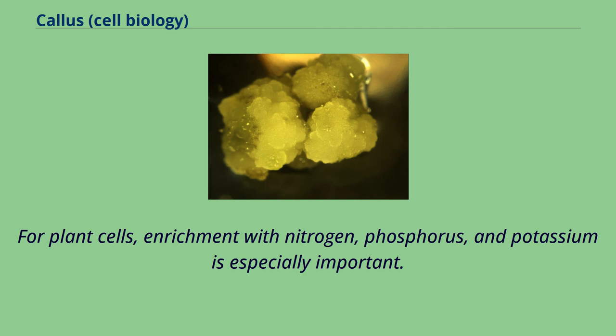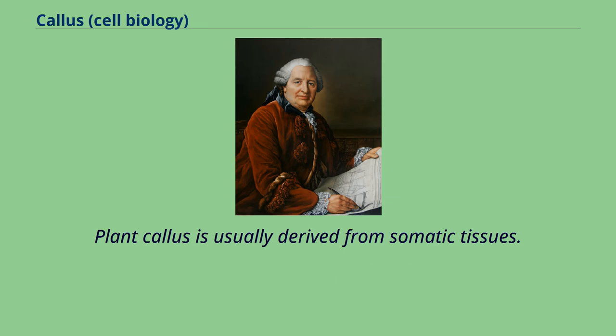For plant cells, enrichment with nitrogen, phosphorus, and potassium is especially important. Plant callus is usually derived from somatic tissues.